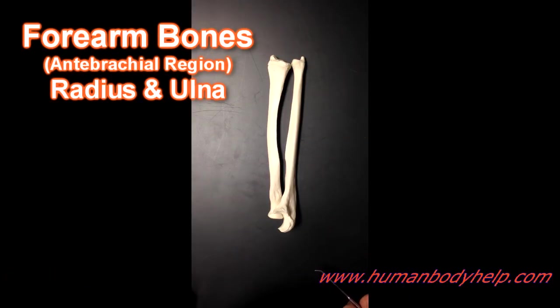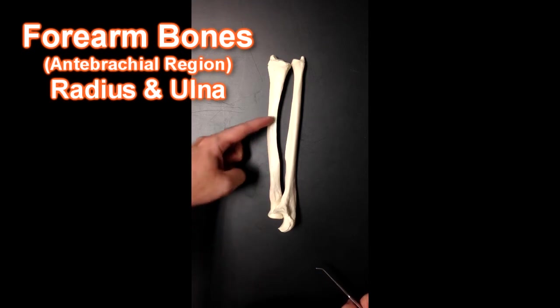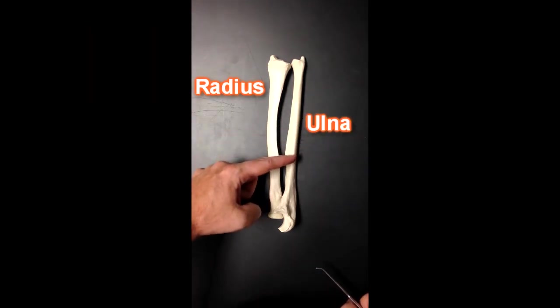Hello this is Dr. Lotz from humanbodyhelp.com and today I'm going to run through the bones of the forearm, the antebrachial region. The two bones in the antebrachial region are the radius and the ulna.